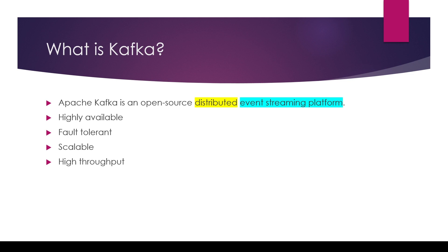Kafka is highly available because it can run on multiple machines or nodes, so if a set of machines or nodes go down, Kafka is still up. For the same reason it is fault tolerant, because it can tolerate some faults. Kafka is also highly scalable because we can add more machines easily to get more power to produce or consume more data. We can simply add more nodes to scale the Kafka cluster, and due to the distributed and highly scalable nature, we get high throughput — more work gets done by the Apache Kafka cluster.